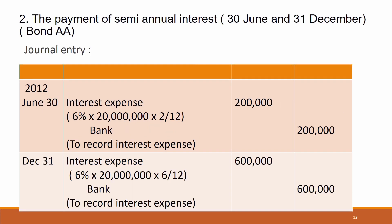We have to record the journal entry for the payment of semi-annual interest — the interest expense paid on 30 June and 31 December. For 30 June, the interest expense is RM200,000. We calculate: 6% × RM20 million × 2/12 months (May and June). The answer is RM200,000. Journal entry: debit interest expense RM200,000, credit bank RM200,000.